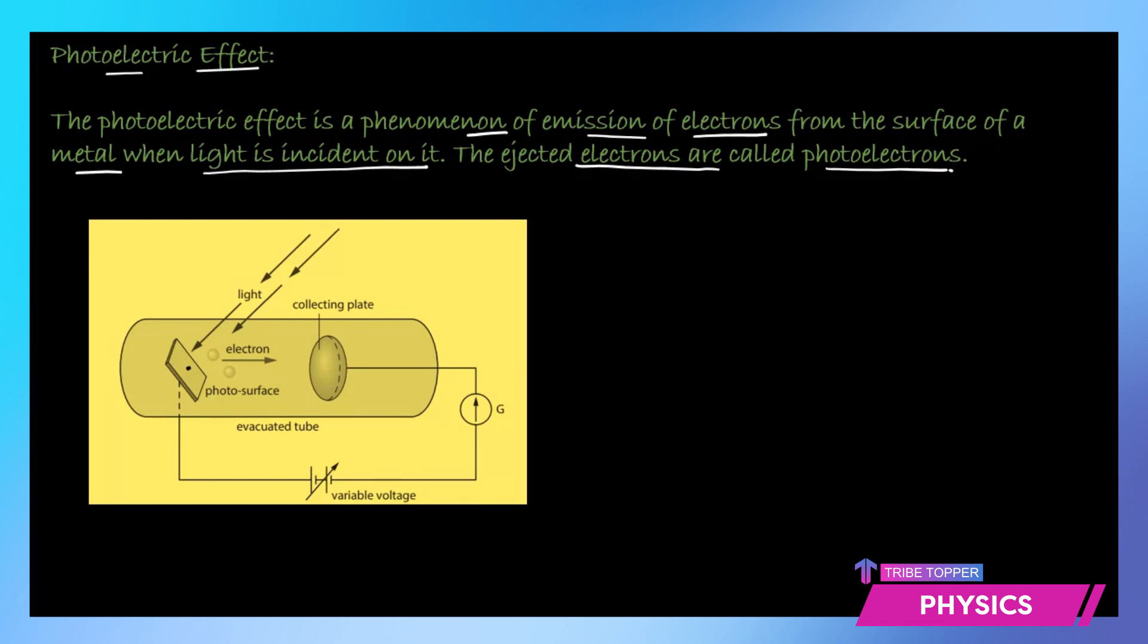Now what is happening out here? There is a collecting plate here connected to a negative voltage. We have connected a variable voltage and we can increase or decrease the voltage. This side is positive, which is holding the electrons, and this side is negative. The moment the light is incident and the electrons are ejected, it's not that all the electrons are going to reach this collecting plate because it is negative, so it's going to repel. Only those electrons which have extra kinetic energy and can overcome the repulsion will reach this collecting plate.